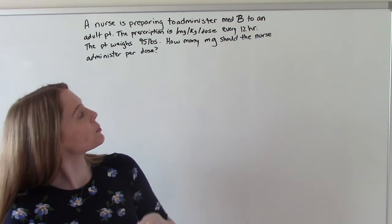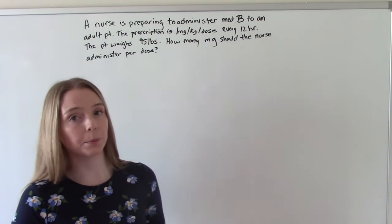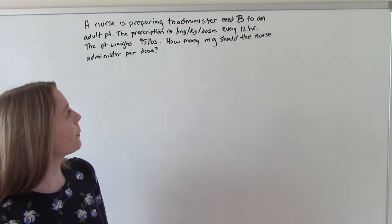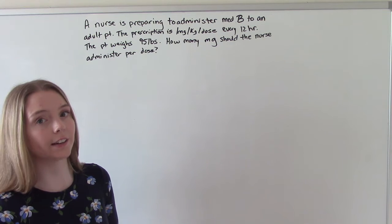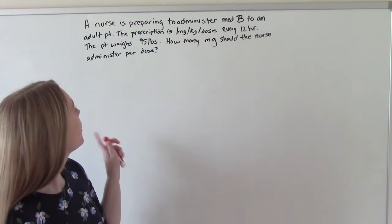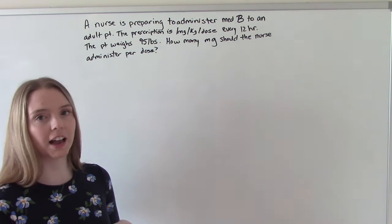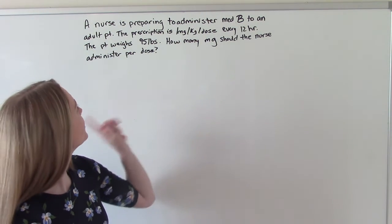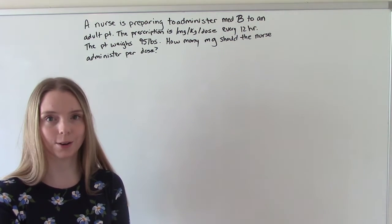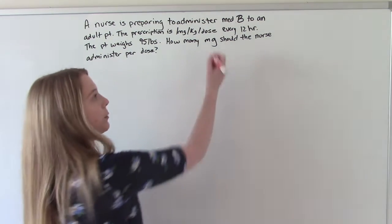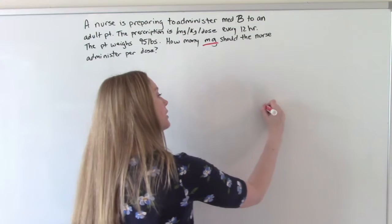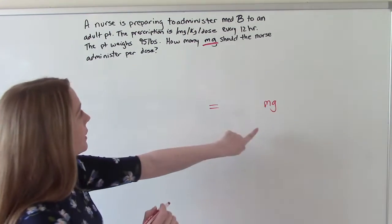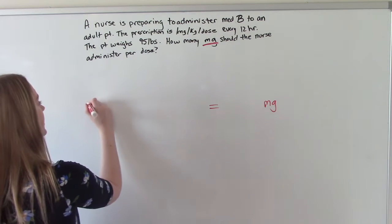A nurse is preparing to administer medication B to an adult patient. The prescription is 1 milligram per kilogram per dose every 12 hours. The patient weighs 95 pounds, so a petite adult. How many milligrams should the nurse administer per dose? So we're looking for milligrams. We're going to have milligrams here and it needs to be in our numerator. So where do we see it?